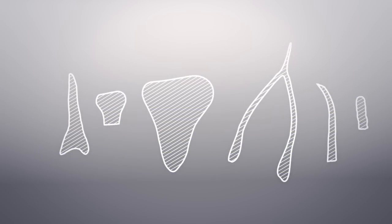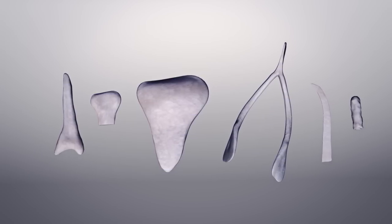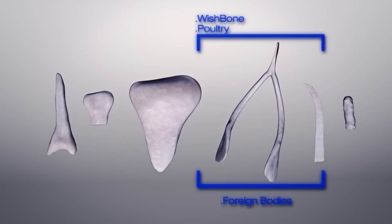Ishida systems can detect a variety of bones from poultry. For example, the fan bone, wishbone and rib bone.